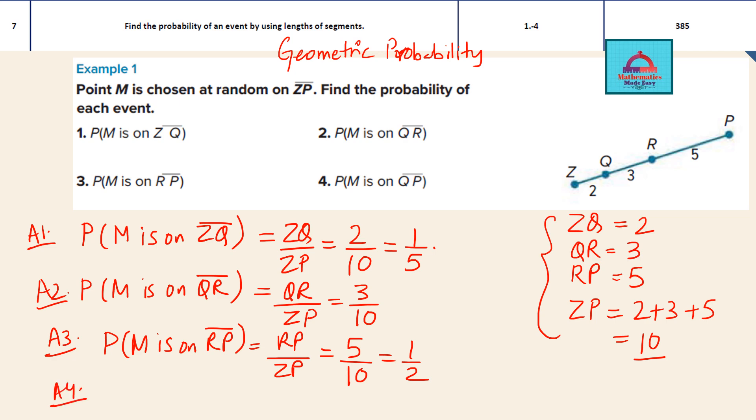Last question 4. You have to find the probability that M is on QP. So QP is how much? Let's see. If we want to find QP we have to add QR and RP. So let's write it here: QP is QR plus RP, so this is going to be 3 plus 5 which is 8. So this length is going to be 8 divided by the total, which you can simplify - divided by 2, divided by 2 - this comes out to be 4 over 5. So these are your complete answers for learning objective 7 questions 1 to 4.